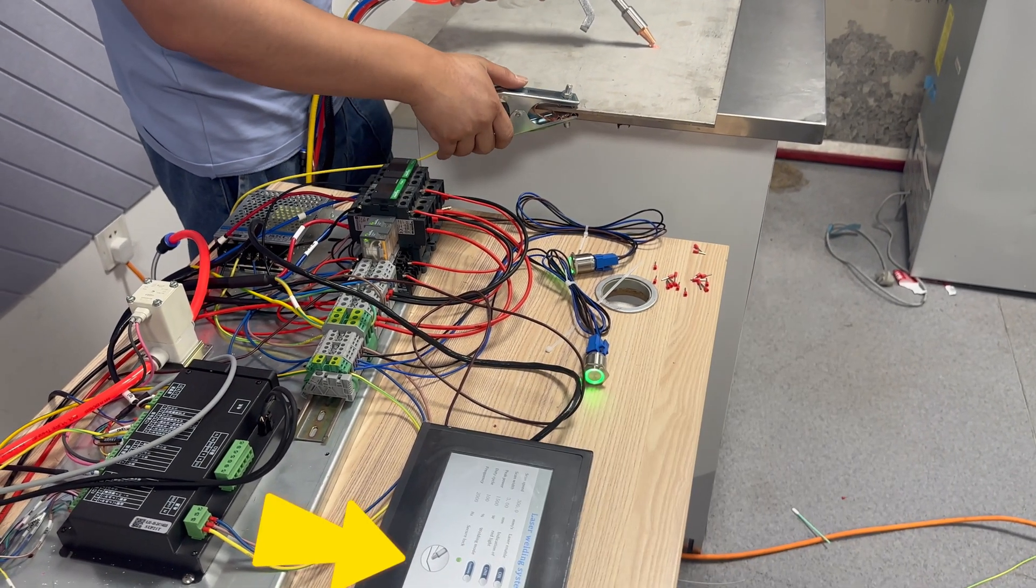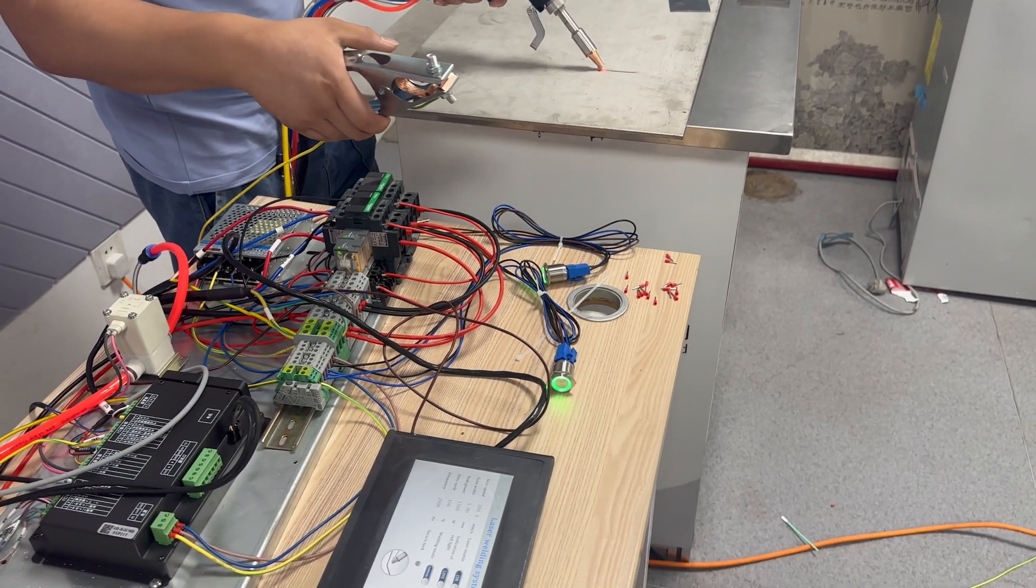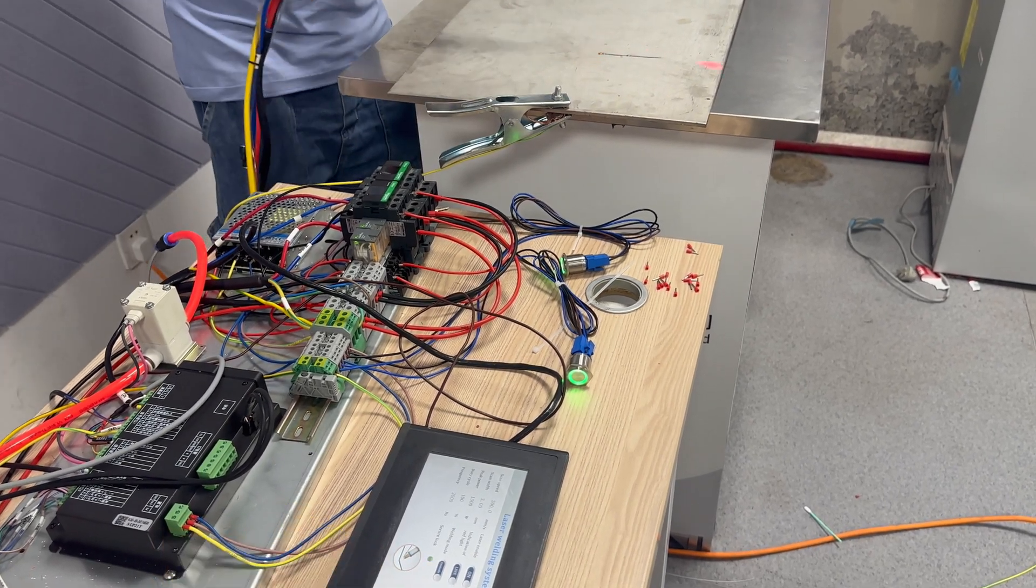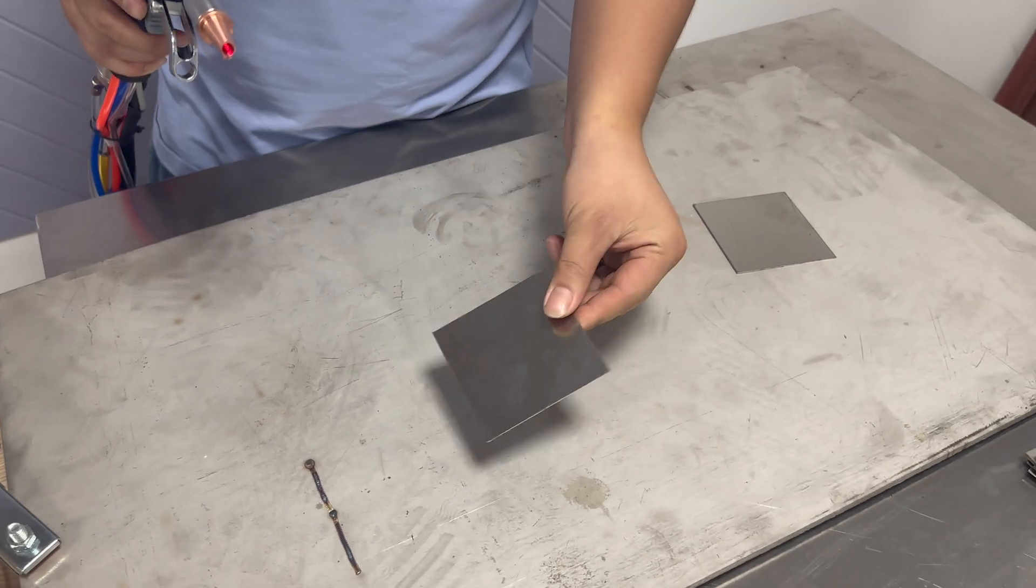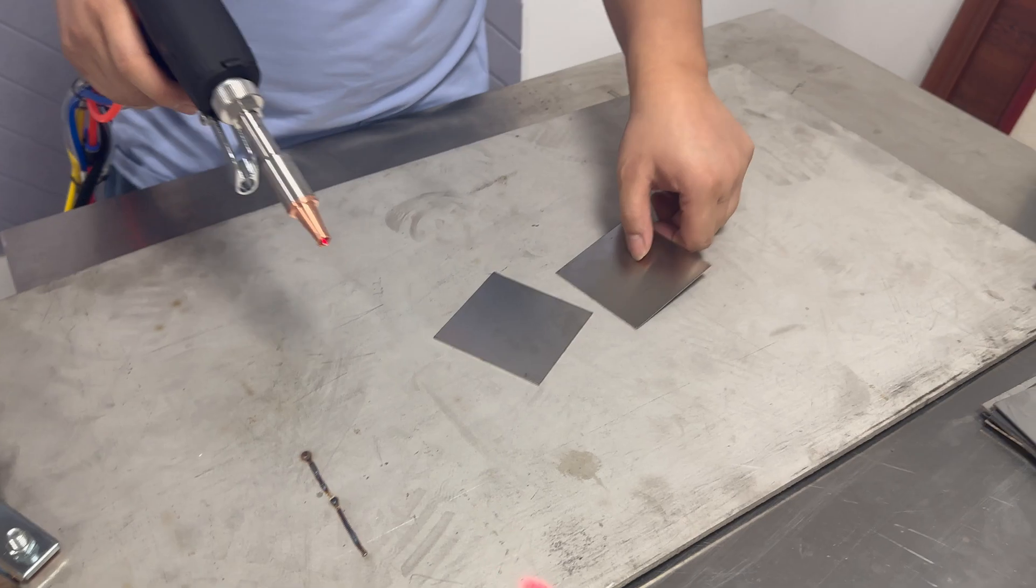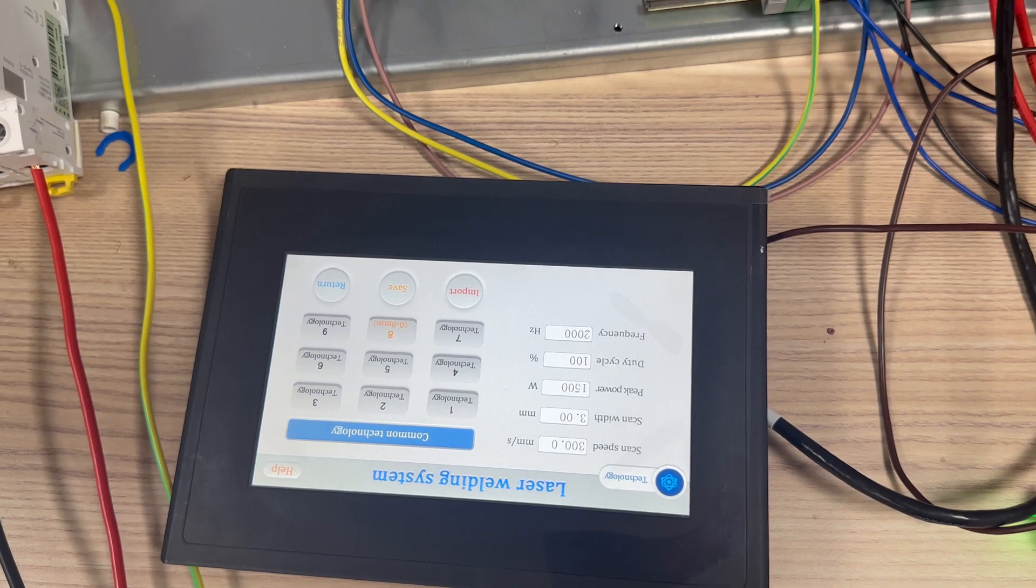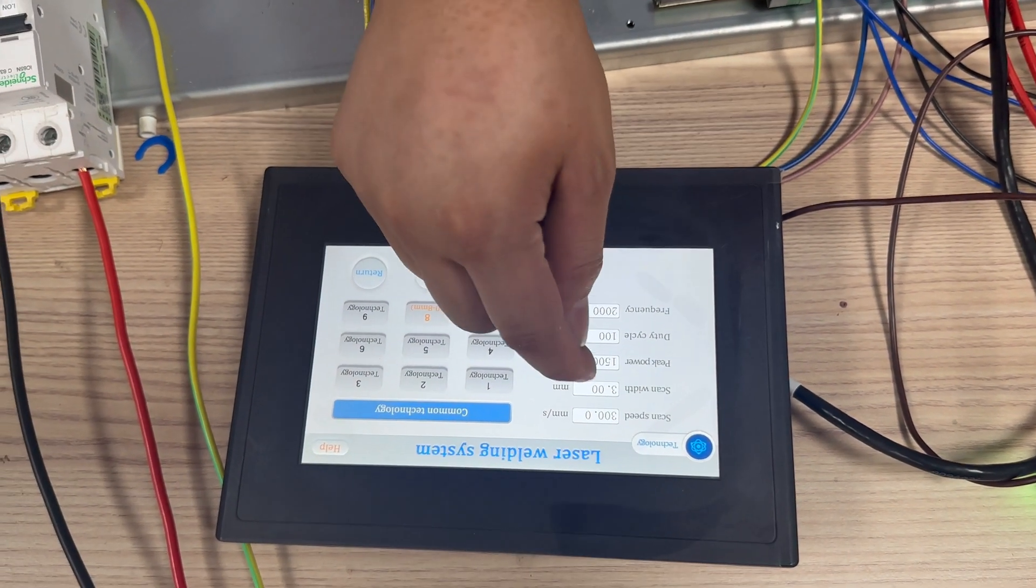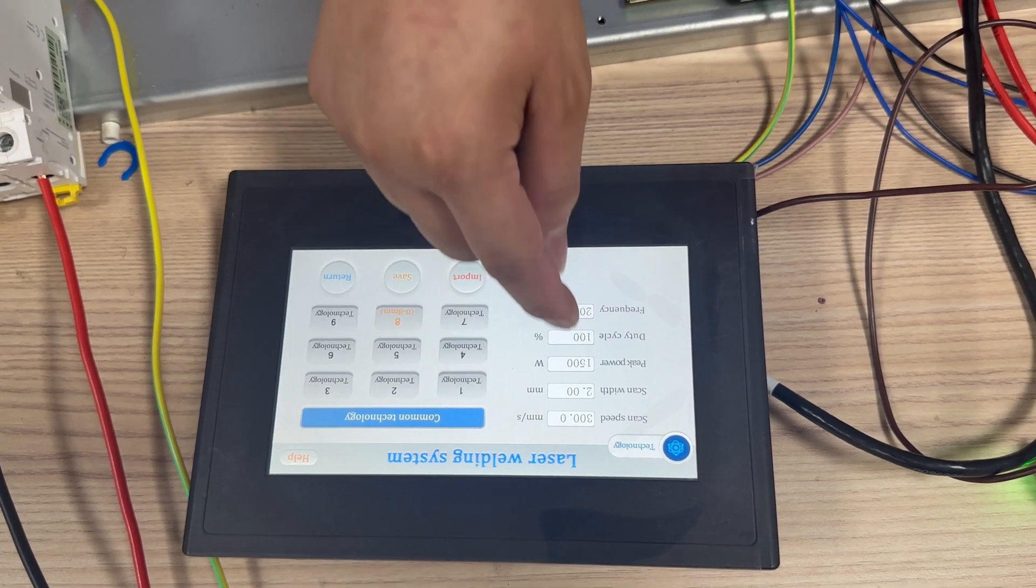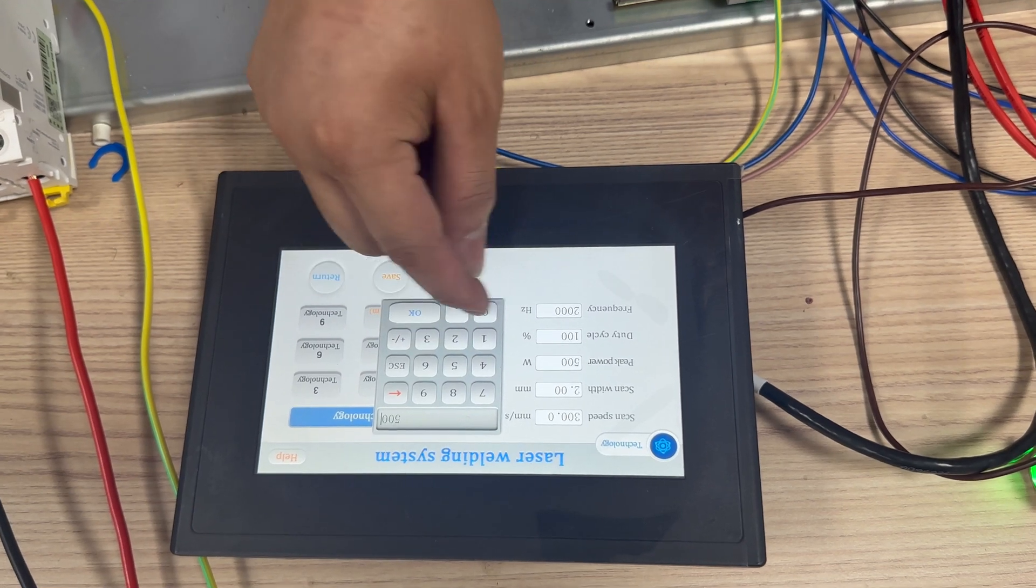This is a one millimeter stainless steel, we did not use wire fitting, just like this directly. Check the processing here, we scan the scan speed and scan width and set it smaller at first. The power will be also smaller.